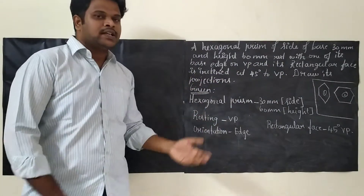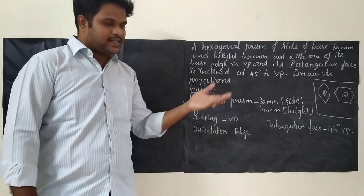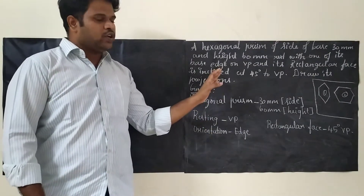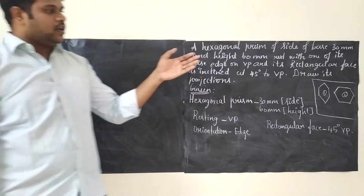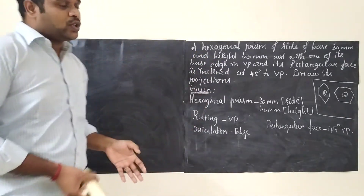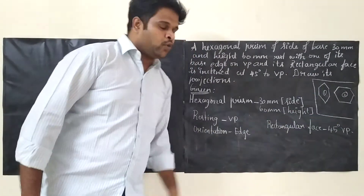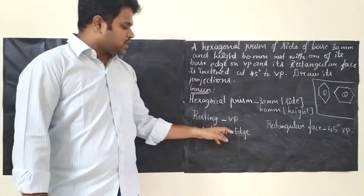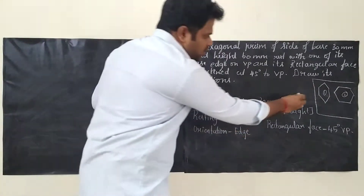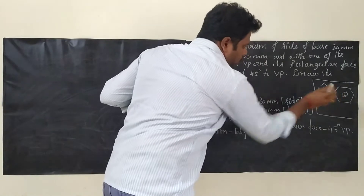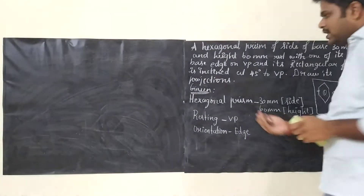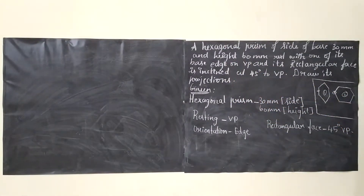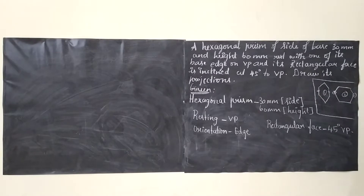What we are going to incline is the rectangular face. Sometimes they will ask you to incline the base edge or axis. In this question, we are going to incline the rectangular face, then draw its projection. There are two types of hexagon — one is edge-oriented and one is corner-oriented. In our question, they clearly mentioned edge-oriented. When working with solids, we see from the right-hand side. Edge means you focus on the edge side, corner means you focus on the corner.